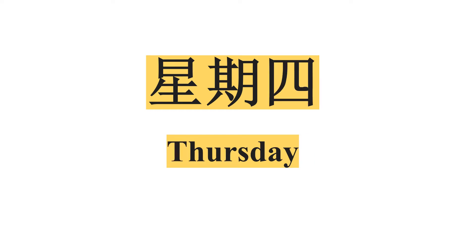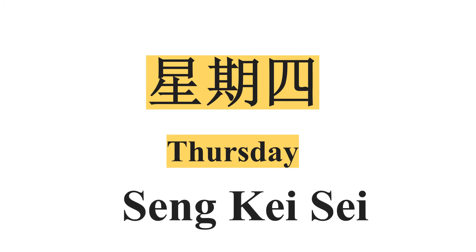Next we have Thursday — 星期四. 四 means four, so it's the fourth day of the week. Remember in the first lesson we talked about pronouncing the number four. 记得我的第一堂课的时候，我有教你们四的发音吗？四的发音呢，有跟另外一个字很像，所以要念好来。